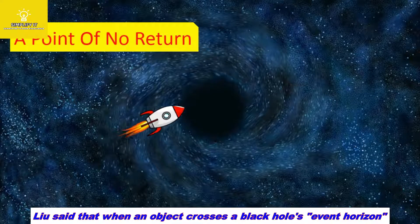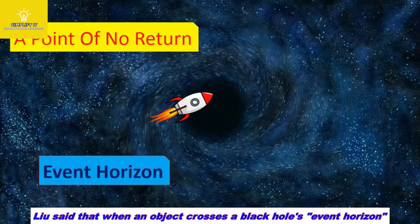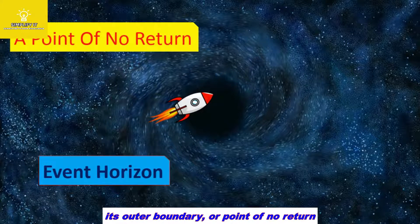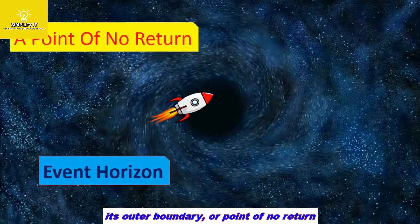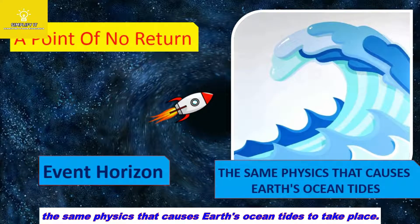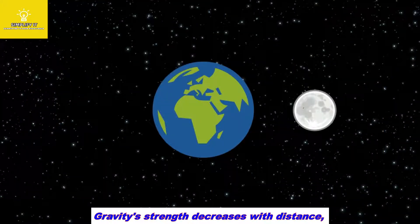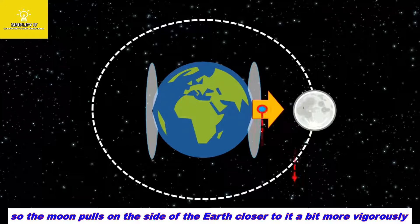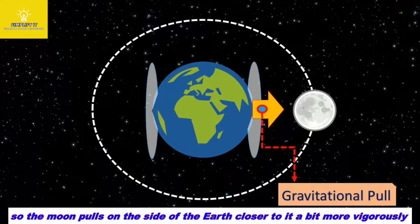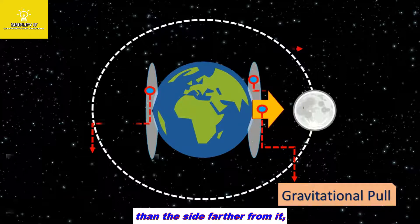Liu said that when an object crosses a black hole's event horizon, its outer boundary or point of no return, the same physics that causes Earth's ocean tides takes place. Gravity strength decreases with distance, so the moon pulls on the side of the Earth closer to it a bit more vigorously than the side further from it.